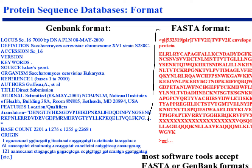FASTA format simply starts with the '>' symbol, followed by a description, then the sequence data — much simpler than GenBank, which includes full annotations. Most software tools accept either FASTA or GenBank format, so it's important to know both.